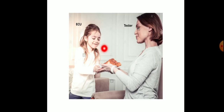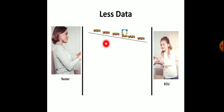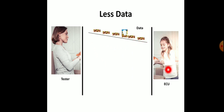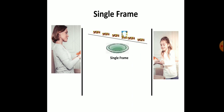Imagine the cute little girl is the ECU and her mom is the tester. The tester is giving food to the ECU. In the plate the mom has given less data — the food is very less, so the food represents the data. The tester is sending the data or request to the ECU. The mom is serving less food to her daughter using a single frame — we consider this plate as a single frame.